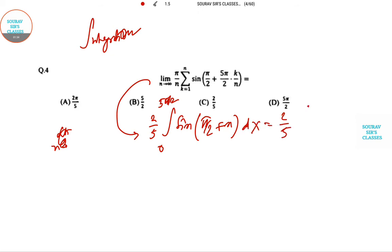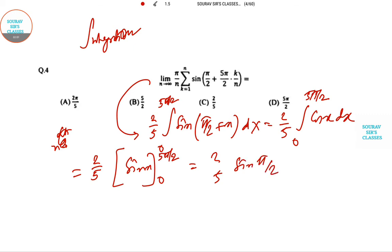This can be written as 2 by 5, 0 to 5 pi by 2, this is becoming cos x dx. So 2 by 5 sin x, 0 to 5 pi by 2. You can put the value and this will be coming as sin pi by 2 finally, which can be rewritten as 2 by 5. So our answer is option C.